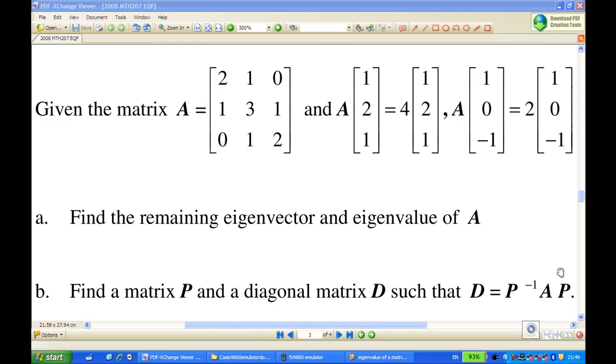Given that matrix A is [2,1,0; 1,3,1; 0,1,2], we are given eigenvector [1,2,1] with corresponding eigenvalue of 4, and eigenvector [1,0,-1] with corresponding eigenvalue of 2.